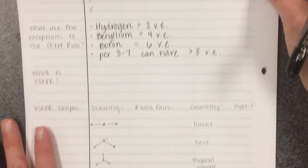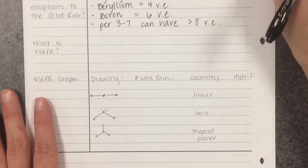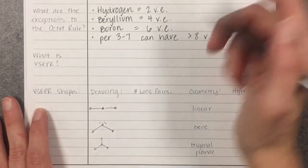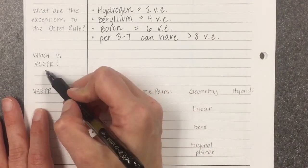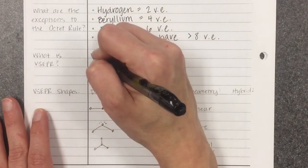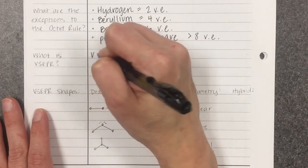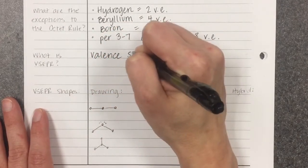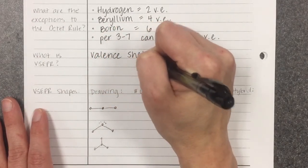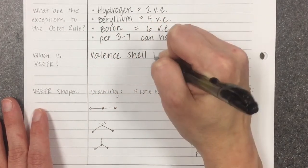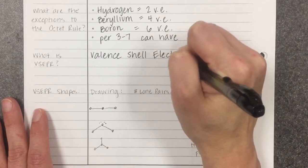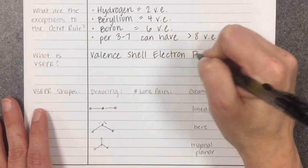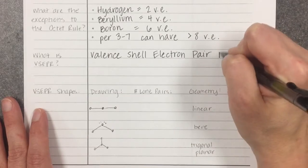So we need to talk about VSEPR — that's how you say that word. It stands for Valence Shell Electron Pair Repulsion.